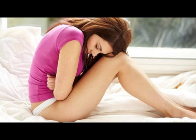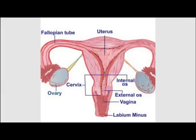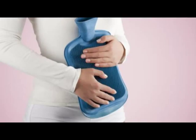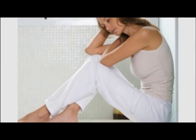At the ovary, estrogen and progesterone are released as the follicle matures. Estrogen affects the development of a woman's body and maturing egg, while progesterone affects the development of the endometrium and breast tissue. The hormonal flow between the three glands operates as a negative feedback system.